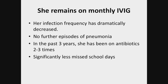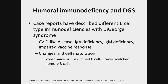She has remained on monthly IVIG for the past three years, and her infection frequency has improved tremendously. She has had no further episodes of pneumonia in those three years, has been on antibiotics only two to three times, and has had many fewer missed school days. Every time we need to convince her insurance to continue IVIG, I review what is known about the antibody deficiency or humoral side of DeGeorge. There really isn't a ton of literature out there, and that is why I wanted to present this case. There are several case reports describing different B-cell type immunodeficiencies in DeGeorge syndrome — CVID-like disease, IgA deficiency, IgM deficiency, impaired vaccine responses, and changes in B-cell maturation.